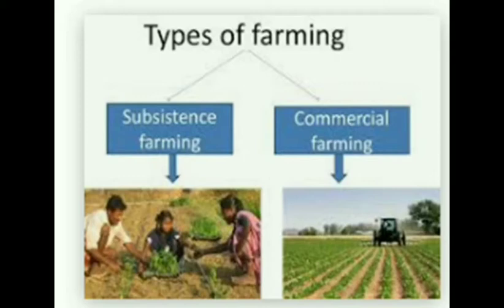So the first topic is Types of Farming. The type of farming depends upon a few factors — in which place, in which way, farming is made possible. They depend on some factors.